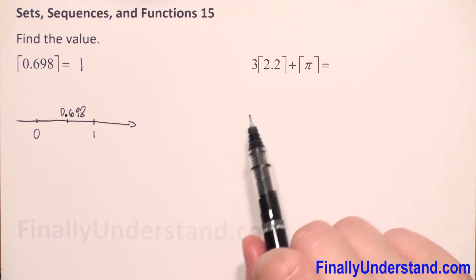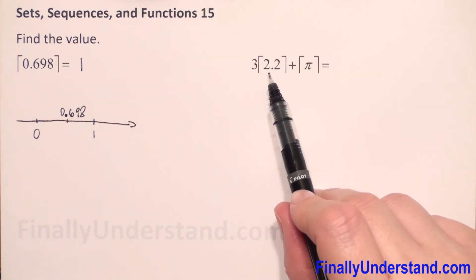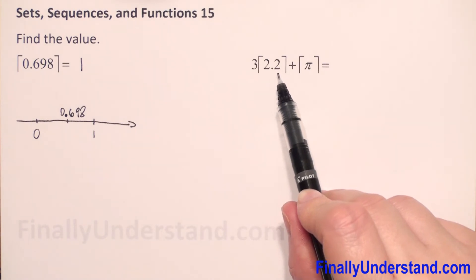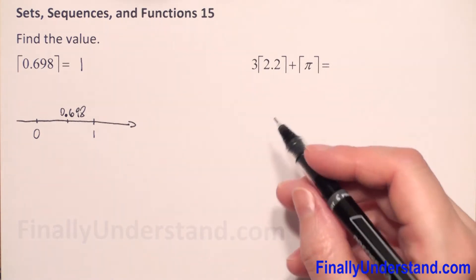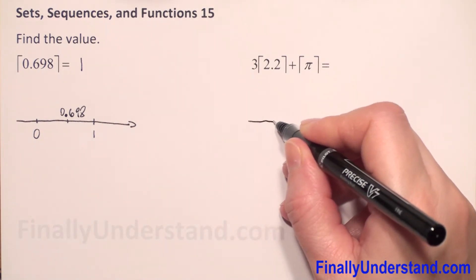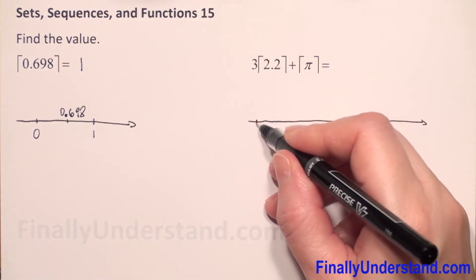And now, in the second example, we have 3 times ceiling of 2.2 plus ceiling of π. So, for this example, we will draw again number line. You have to find 2.2 and π.